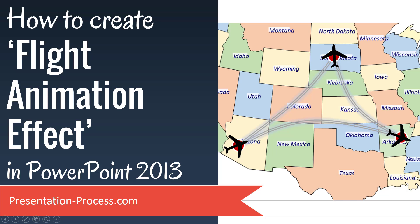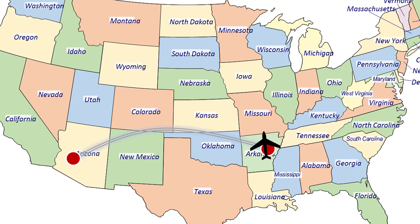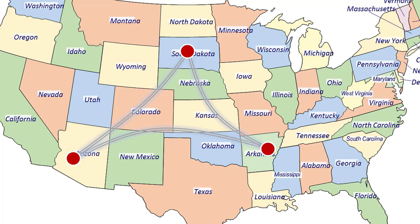The beautiful animation effect you will learn to create today looks like this. I'm going to use the Flight Animation Effect to tell a small fictitious story. We went on a round trip across the US, starting from our home in Arizona, flew to Arkansas to see Hot Springs National Park, then to South Dakota to see Mount Rushmore National Memorial, and back home to Arizona. Let me show you how to create this beautiful flight animation effect from scratch.